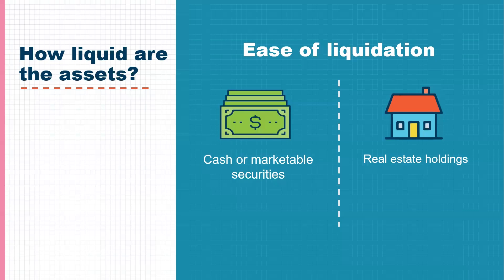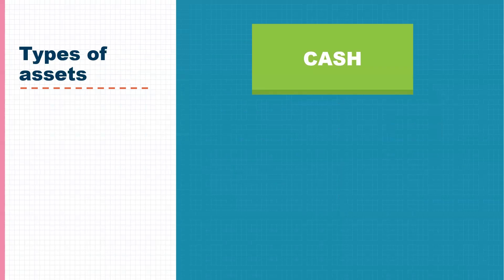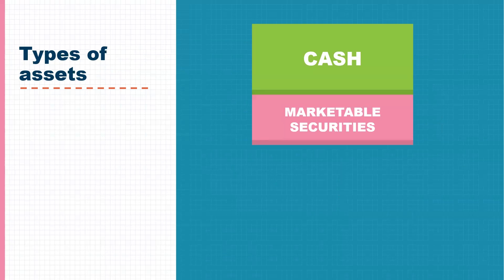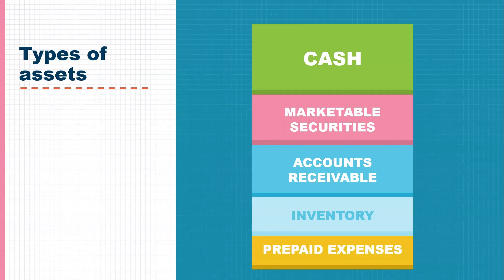Breaking it down further as to what type of assets are reported on a business balance sheet: we see cash, which is the most liquid, followed by marketable securities such as stocks, bonds, or treasury bills, then accounts receivable, inventory, and prepaid expenses. Inventory may or may not be included based on whether or not the business is reliant on inventory to continue making money. Most investors would prefer that we not include prepaid expenses.